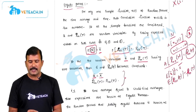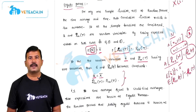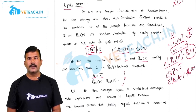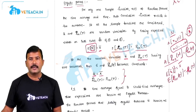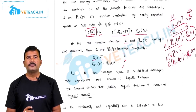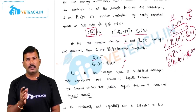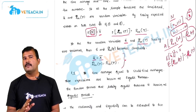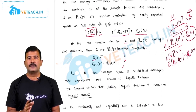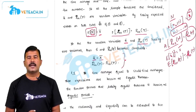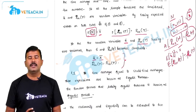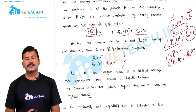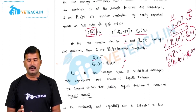If these two conditions are satisfied for a random process, such a random process is called ergodic, and the two conditions together are known as the ergodic theorem. In brief, for a random process, if the time average for any one sample function equals its statistical average, and the time autocorrelation function equals the statistical autocorrelation function, then such a process is called an ergodic random process.